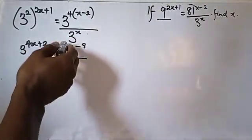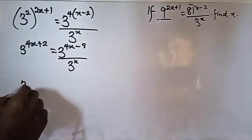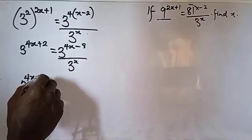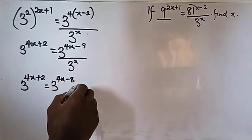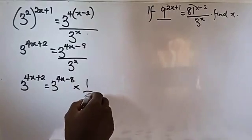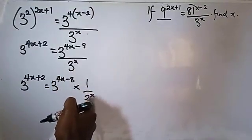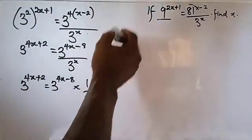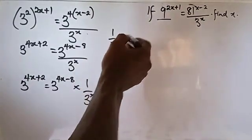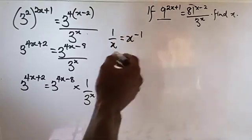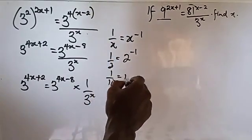This is a fraction, so let us make it a linear expression. We have 3 raised to power 4x plus 2 equals 3 raised to power 4x minus 8, times 1 over 3 raised to power x. Now, by the law of indices, 1 over a term means a negative exponent — for example, 1 over x is the same as x raised to power minus 1, and 1 over 2 is the same as 2 raised to power minus 1.